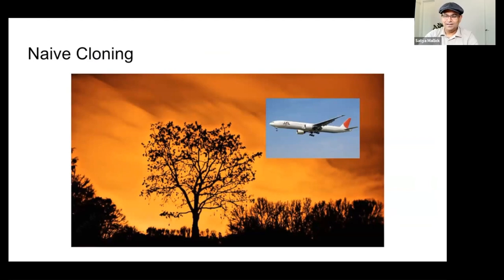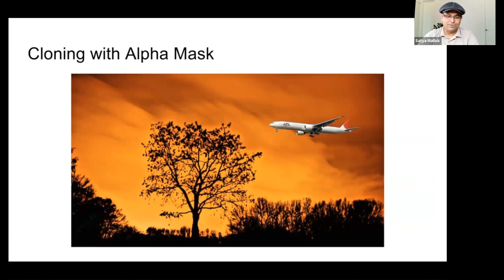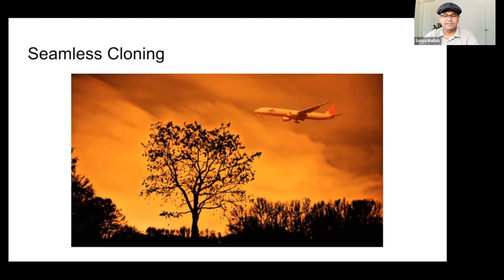Unless you are the parent of the person who did this, you will not be impressed. What we really want is the airplane to look like it is part of the same environment — the features and colors of the airplane are also preserved. The airplane looks like it belongs to the scene. That's what we are going to learn how to do using OpenCV.